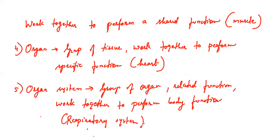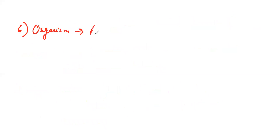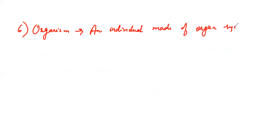And then forms the complete organism. An organism is an individual made of organ systems which work together to keep the particular organism alive — for example, humans.